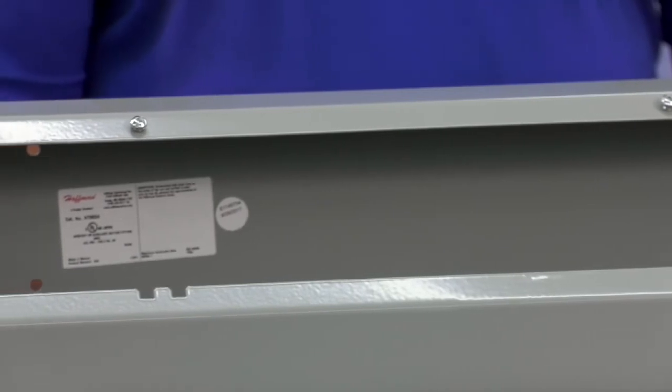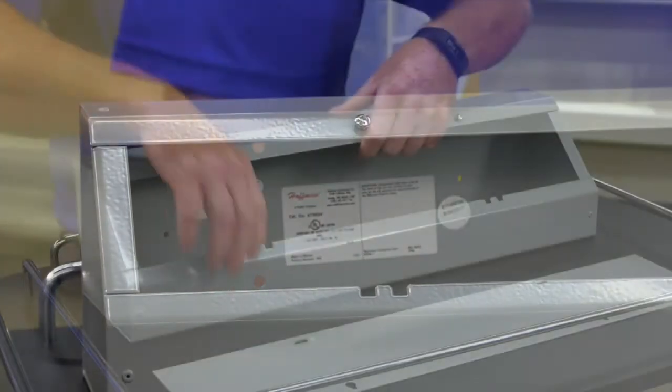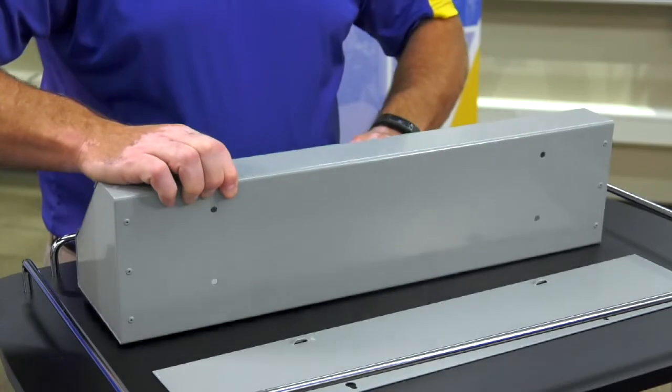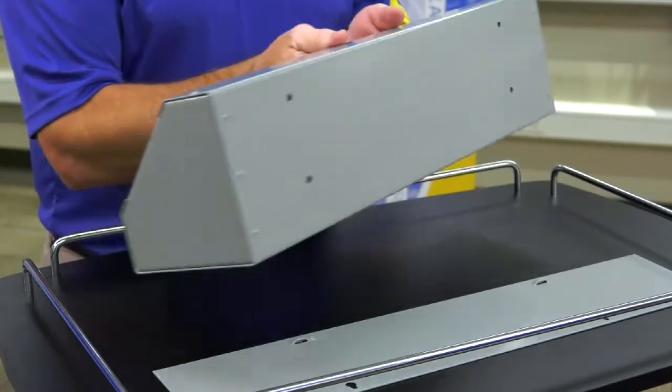Angle Trough allows you to run conduit on all six sides including the front. It has mounting holes installed by Hoffman already for easy installation.